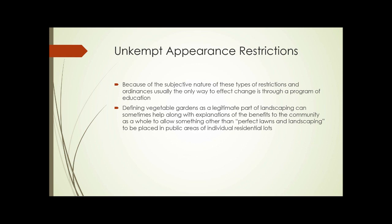Unkempt appearance restrictions: because of the subjective nature of these types of restrictions and ordinances, usually the only way to affect change is through a program of education. Defining vegetable gardens as a legitimate part of landscaping can sometimes help, along with explanations of the benefits to the community as a whole, to allow something other than perfect lawns and landscaping to be placed in public areas of residential lots. These restrictions are at their most restrictive in homeowners association areas, and sometimes you just can't change those restrictions. If they're going to be changed, however, education is the key.